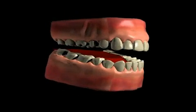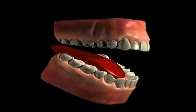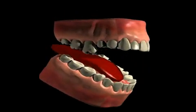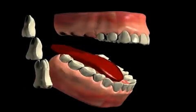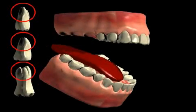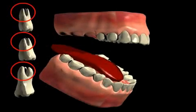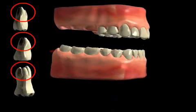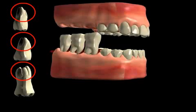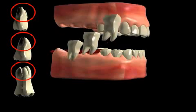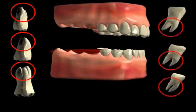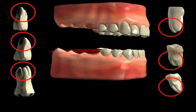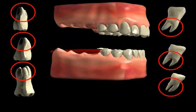Furcation means separation. In the case of dentistry, this refers to the splitting up of the roots of teeth that have several roots. In the upper jaw this is called trifurcation, since the molars of the upper jaw have three roots, and in the lower jaw this is called bifurcation, as molars in the lower jaw have two roots.